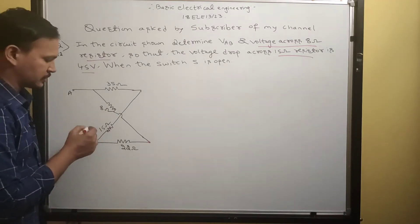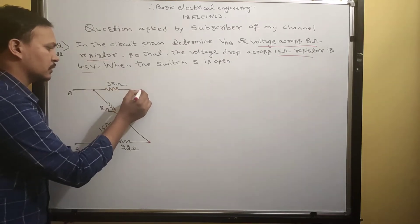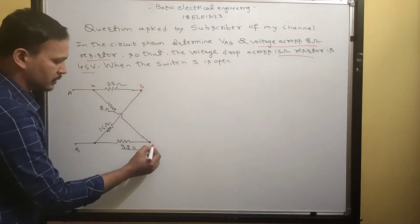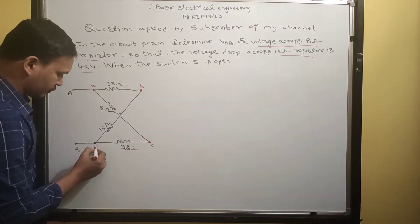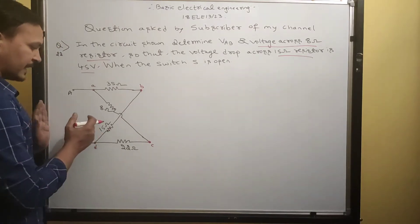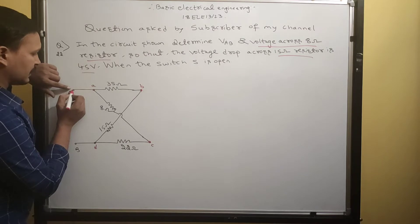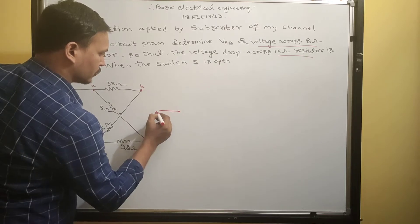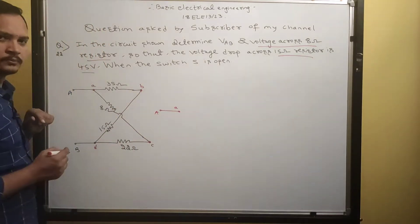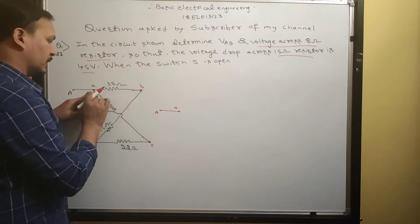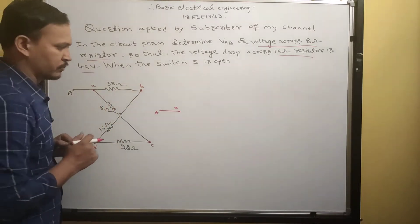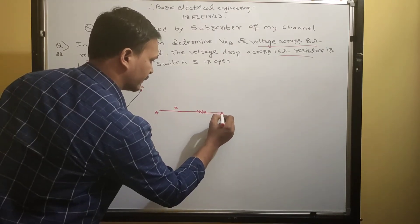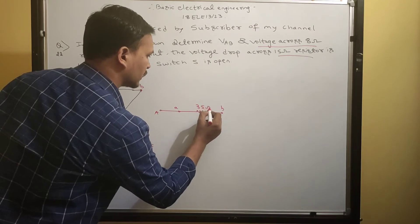Whenever you find such type of questions, mark the dots and give some small names — like small a, small b, small c, and small d. Just give some names. Now you rearrange this circuit. Look here: capital A is connected to small a. A is connected to B by one resistor of 35 ohm resistance. So A is connected to B — the resistance value is 35 ohms.